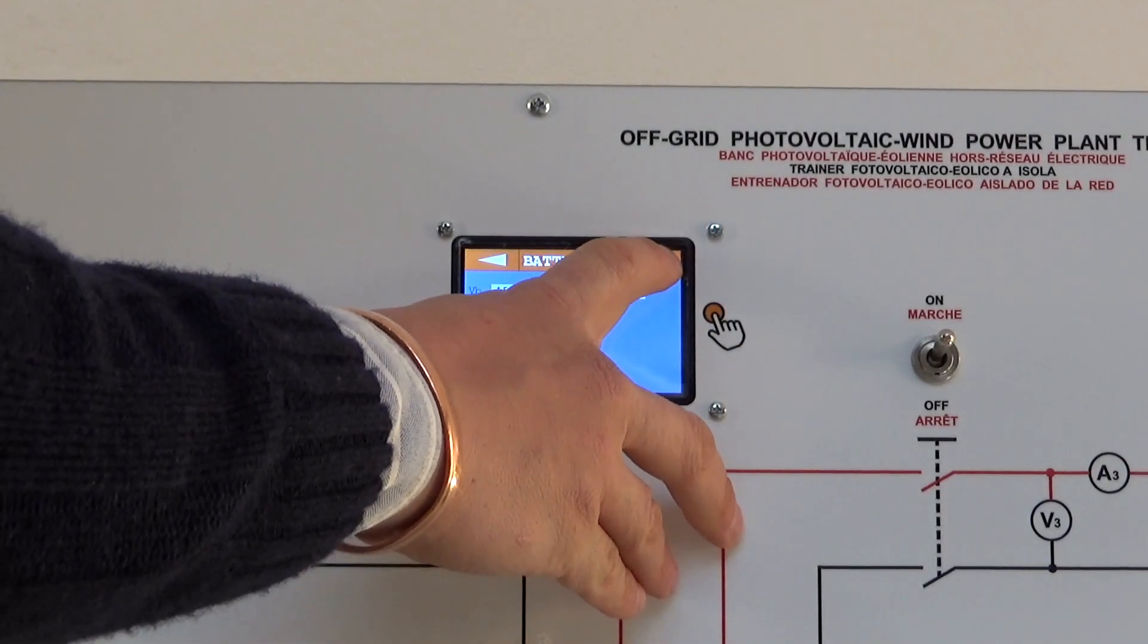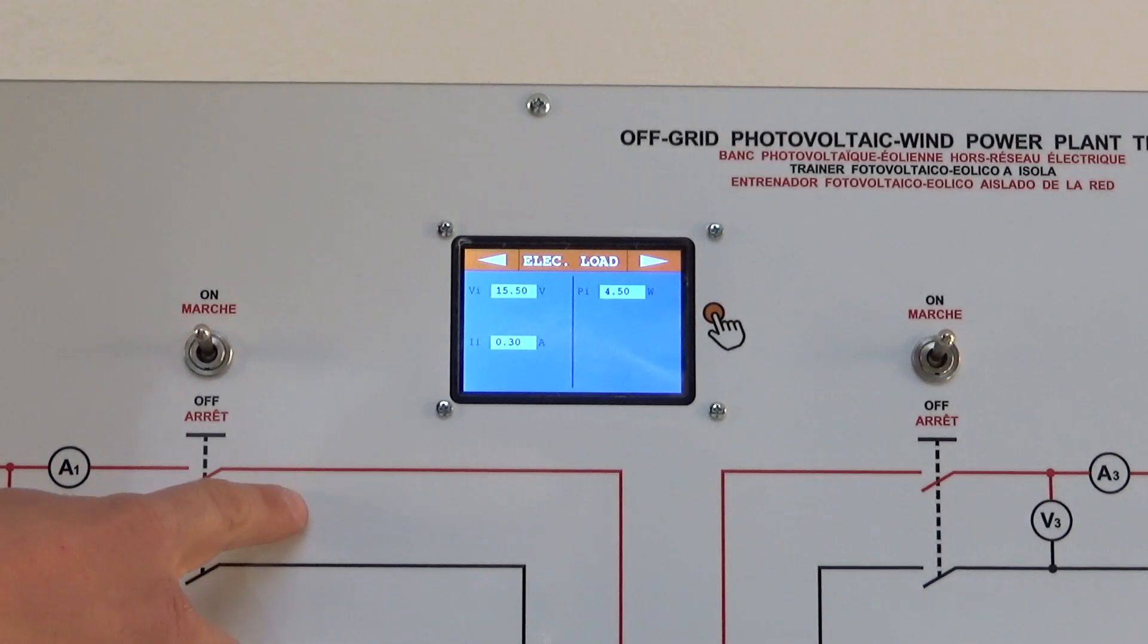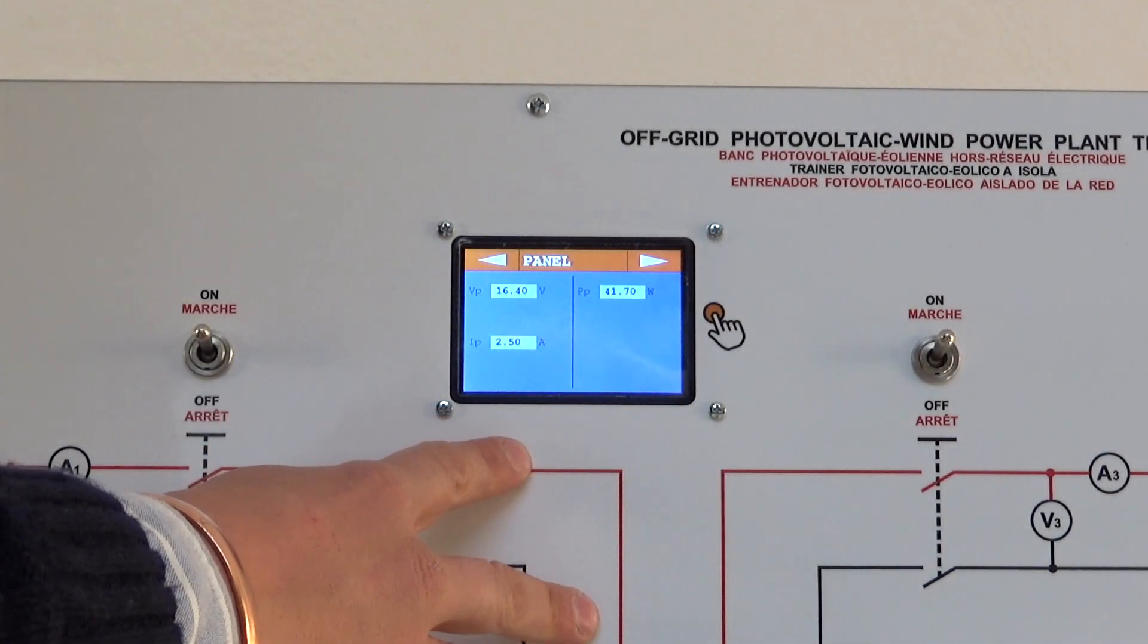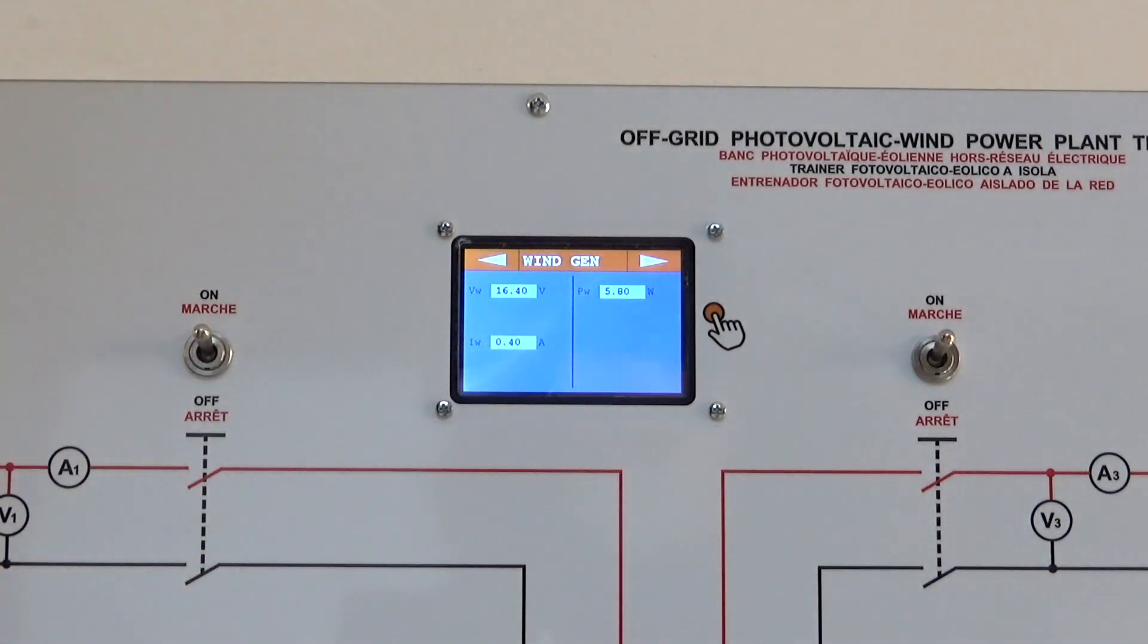Now we can see in each component the electrical DC components of the current produced by each element.